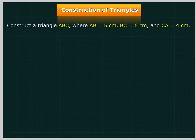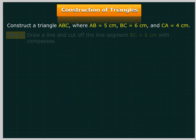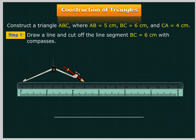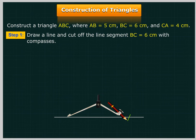We will construct a triangle ABC where AB equal to 5 cm, BC equal to 6 cm and CA equal to 4 cm. Draw a line and cut off the line segment BC equal to 6 cm with compasses.